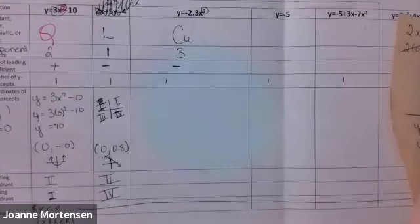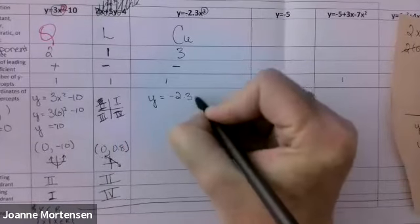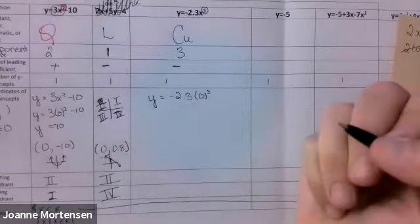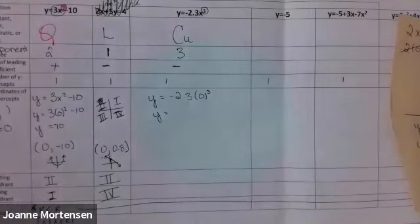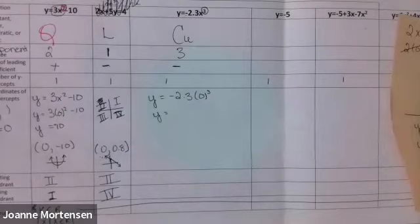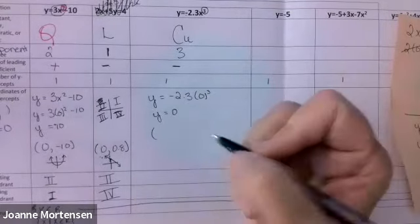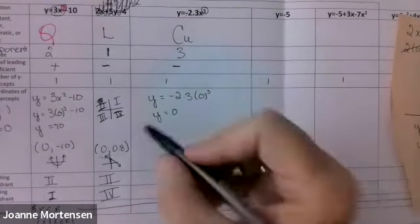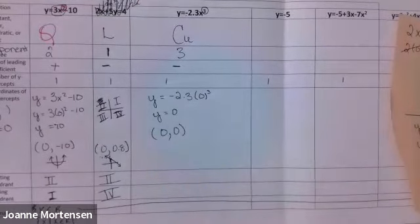One y-intercept. Do the math: y equals negative 2.3 times zero cubed. Zero cubed is zero, so y equals zero. The coordinates are going to be (0, 0) — it crosses at the origin.